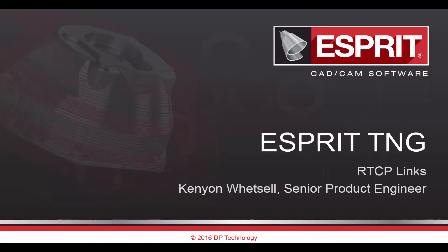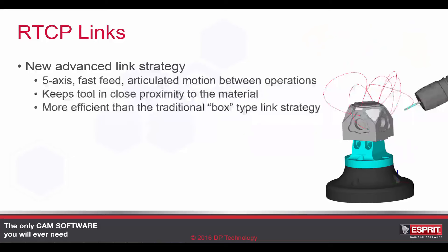Hello and welcome to this presentation on RTCP links in Esprit TNG. This is a new advanced linking strategy which employs five-axis fast feed articulated motions to move to, from, and between operations. By keeping the tool in closer proximity to the workpiece, the result is a more efficient motion than what is possible with the traditional box-type link strategy.